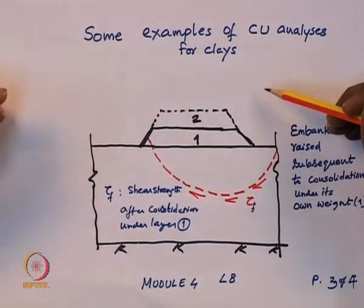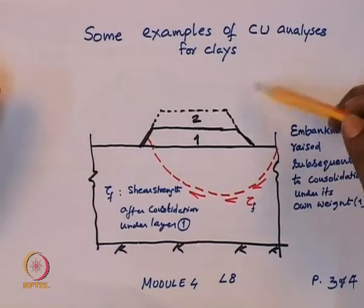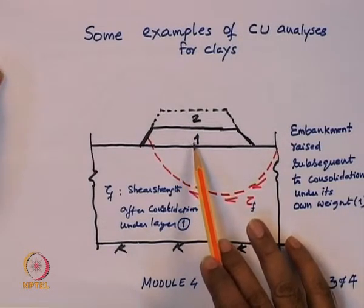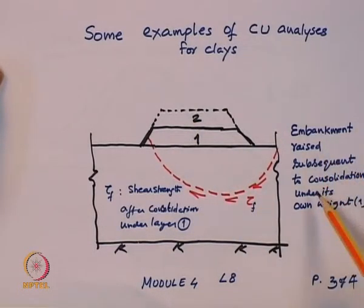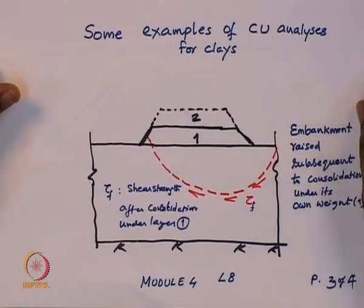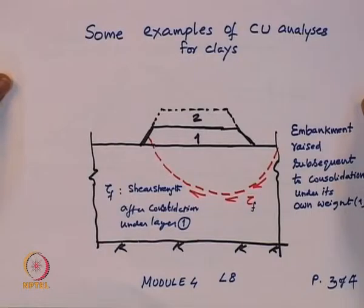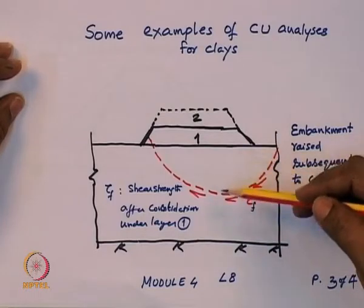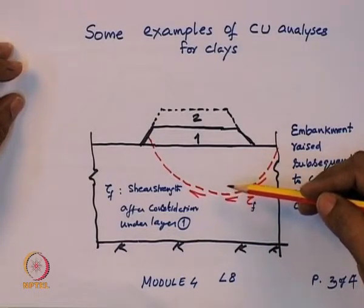An example for the CU test is staged embankment construction on soft clay, where Stage 1 consolidation is allowed with drainage, but Stage 2 embankment loading is applied rapidly without drainage, potentially causing failure. In this case, the soil has consolidated under Stage 1 loading but shearing in Stage 2 occurs without drainage, making consolidated undrained parameters appropriate for the analysis.